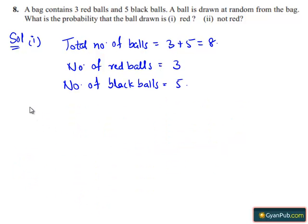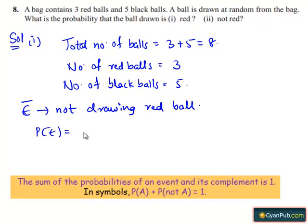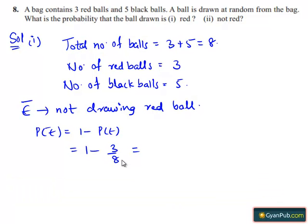Let E bar be the event of not drawing red ball. Then we have P of E bar equals to 1 minus P of E which is 1 minus 3 whole divided by 8. Taking LCM 8 in the denominator, we get 8 minus 3 whole divided by 8 which is nothing but 5 divided by 8. Therefore, the probability that the ball drawn is not red is 5 divided by 8.